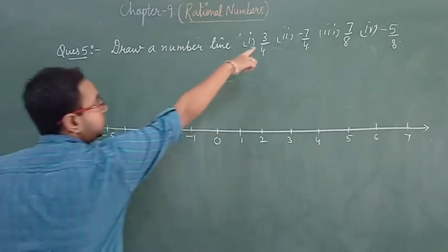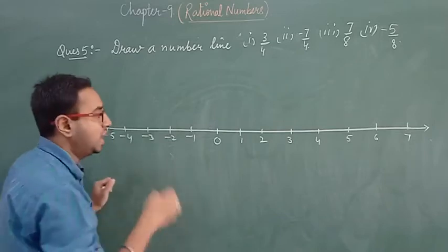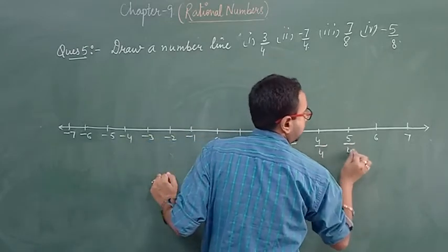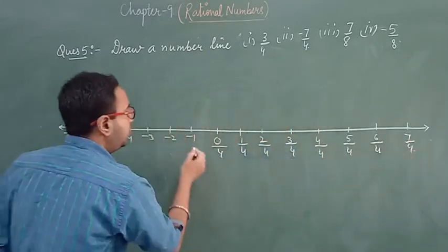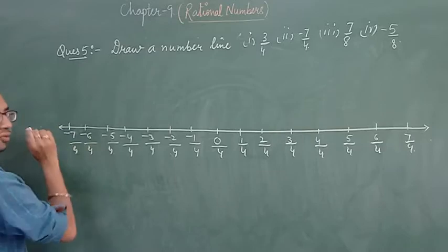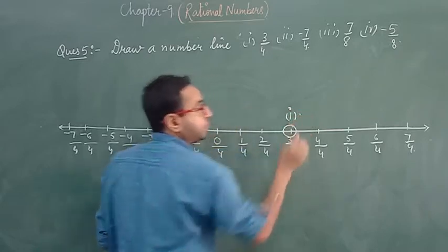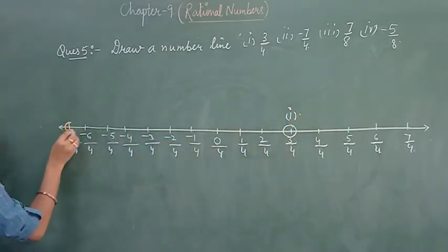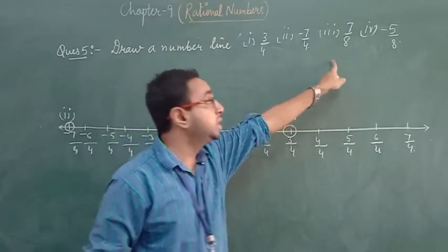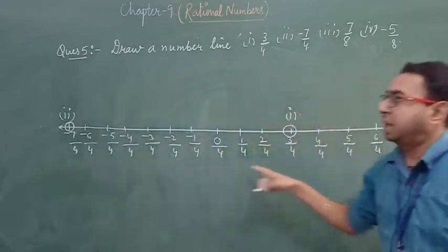We have to represent 3 by 4, so we need denominator 4. Where is 3 by 4? Circle and mark the first one. Minus 7 by 4 — circle and mark the second one. Now the denominators have changed for 7 by 8 and minus 5 by 4, so those two rational numbers will be represented on another number line with that denominator.